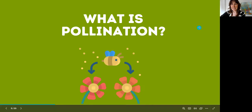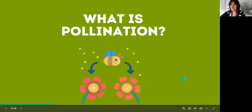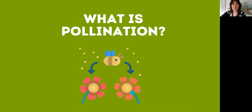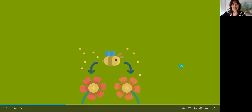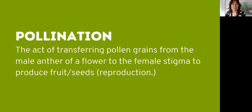So first things first — what is pollination? There are a few definitions I like to use. We very often simply understand it as bees going from one flower to the next. But the typical definition I like to use is: the act of transferring pollen grains from the male anther of a flower to the female stigma in order to produce fruit or seeds. And of course, this is reproduction. When giving this definition to children, I think taking into consideration their age levels is important — I typically keep it simple: taking pollen from one flower to another in order to make more flowers.